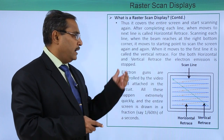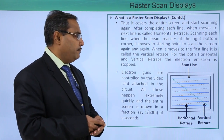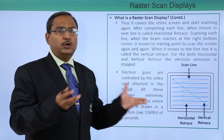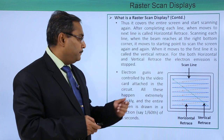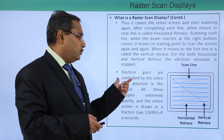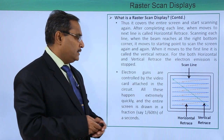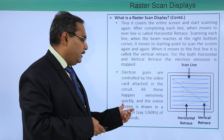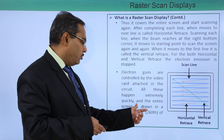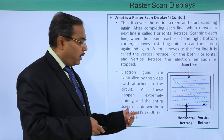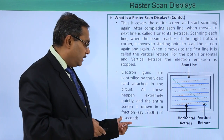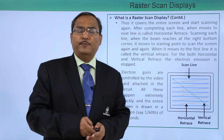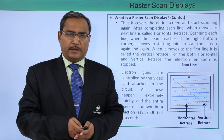For both horizontal and vertical retrace, the electron emission is stopped, so no electrons are emitted and no phosphor dots glow during that movement. The electron guns are controlled by the video card attached in the circuit. All this happens extremely quickly and the entire screen is drawn in a fraction of 1/60th of a second. This is how raster scan display produces images on the computer display.